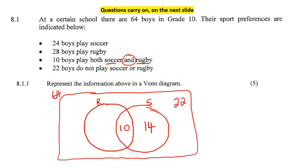We are then told that 28 boys play rugby. So 28 boys play rugby. So that means this whole circle must be rugby. So that means that this part here would just be 18. Okay. And that's it. We have filled in everything on the Venn diagram.